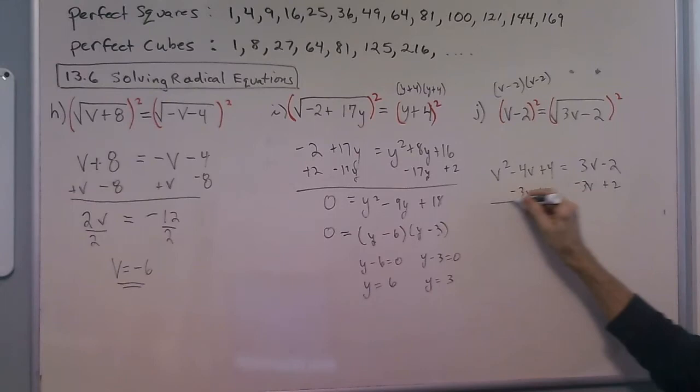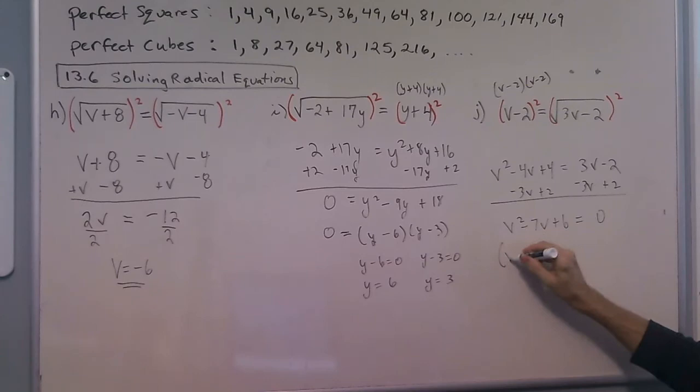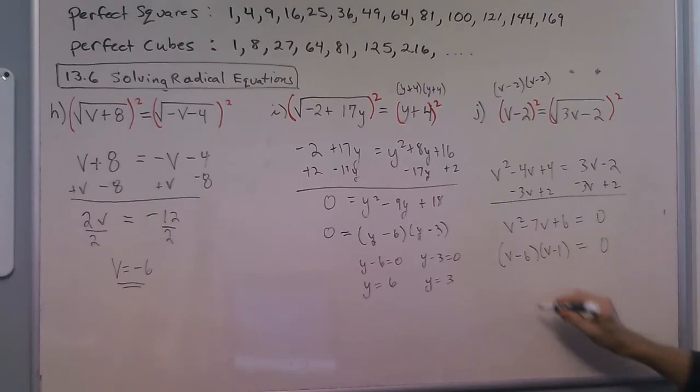So we get v squared minus 7v plus 6 equals 0. Then we have v minus 6 and v minus 1 once we factor it. And then this one will yield v equals 6, and this one v equals 1.